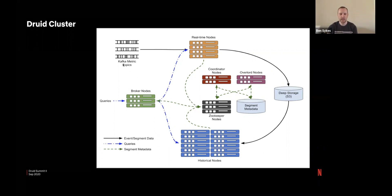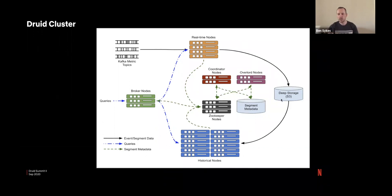So some of the flows we may have, we have ingestion coming in through Kafka. We do not do any batch ingestion into this cluster. The real-time nodes will subscribe to those Kafka topics, create the segments as they're going and eventually hand them off into deep storage into S3.